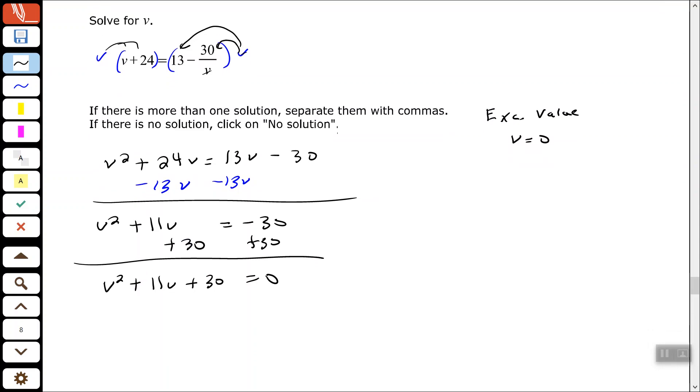Okay, so we have V squared plus 11V plus 30 equals zero. So now we need to try to factor this. We need factors of 30 that add up to be 11. What two numbers do I multiply to get 30 that also add up to be 11? So six and five.